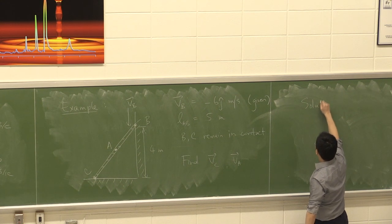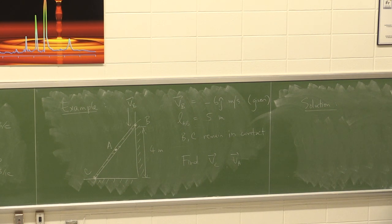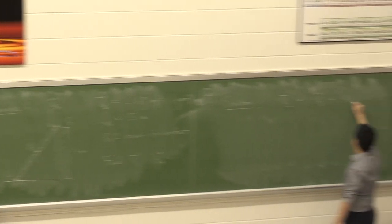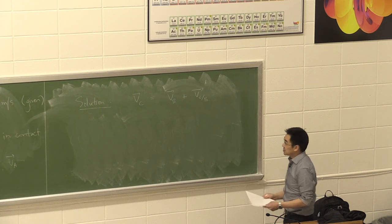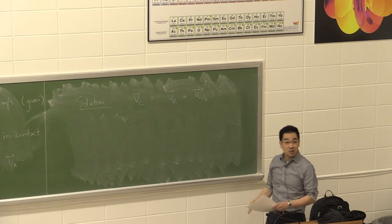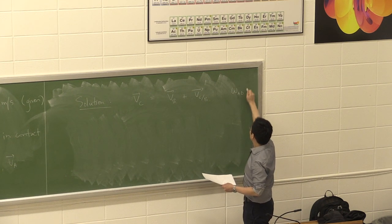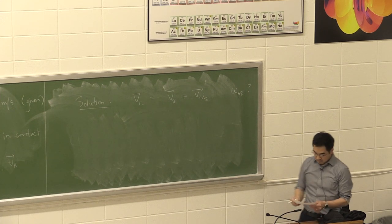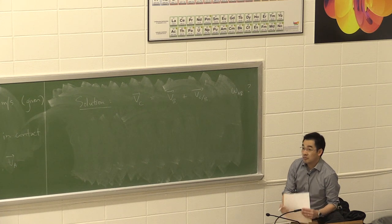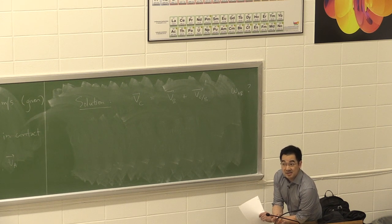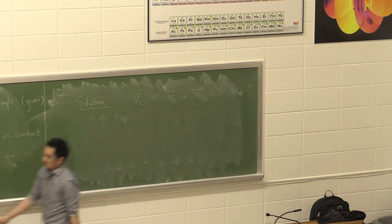Your solution goes like the following. You're going to refer to a velocity you already know something about — you know a lot about VB. Except you run into issues where you know the direction of VC but don't know much about VC with respect to B. You don't even know omega yet — you don't know what the angular velocity omega_AB is. So one way to get around this is: what if we tried to find this instantaneous center of zero velocity? Where would it be in space?